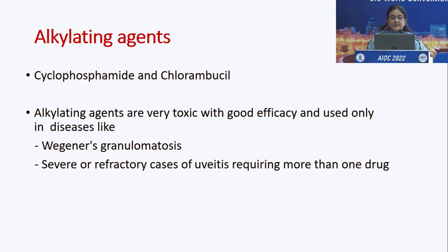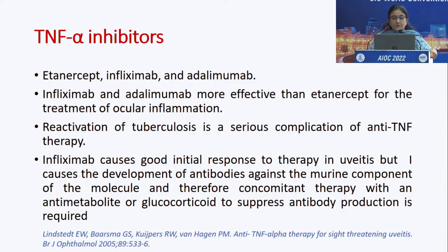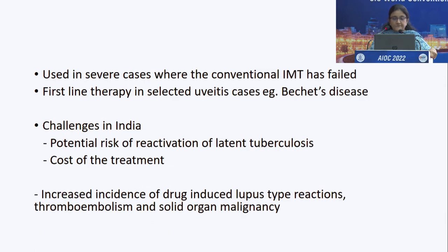TNF-alpha inhibitors are also there but less frequently used. They are used in severe cases where conventional immunomodulatory therapy has failed. They are the first-line therapy in selected uveitis cases like Behcet's disease. The challenges in India are potential risk of reactivation of latent tuberculosis and the cost of treatment which may be unaffordable to many patients.